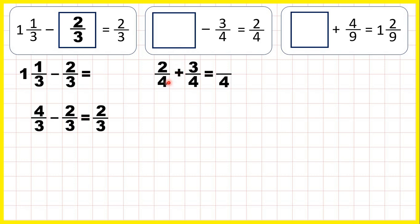So the denominator stays the same in our answer and two plus three is five. So our answer is five quarters or as a mixed number is one and one quarter because five divided by four is one remainder one and the denominator stays the same.